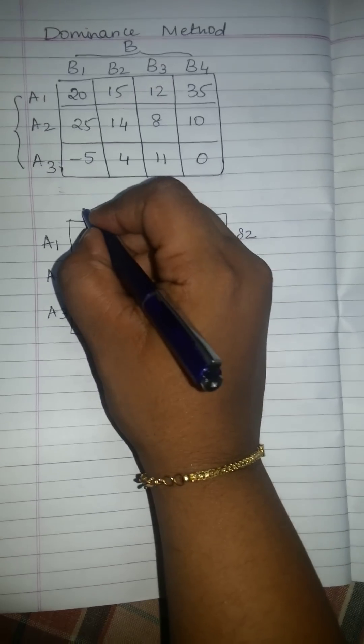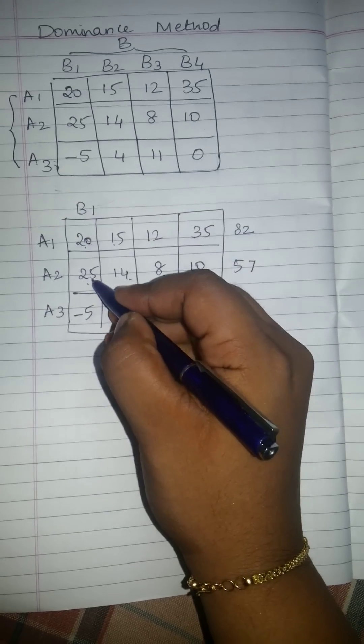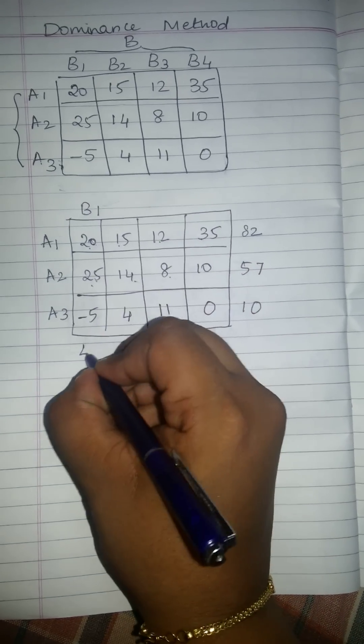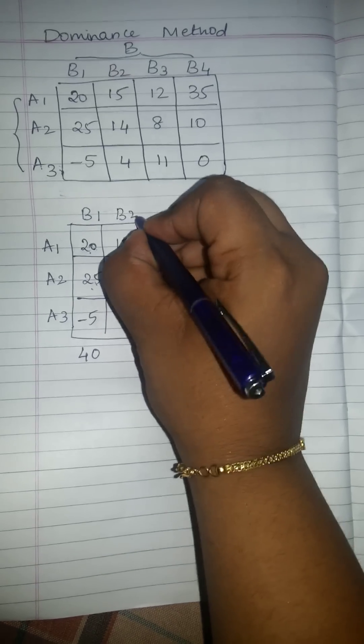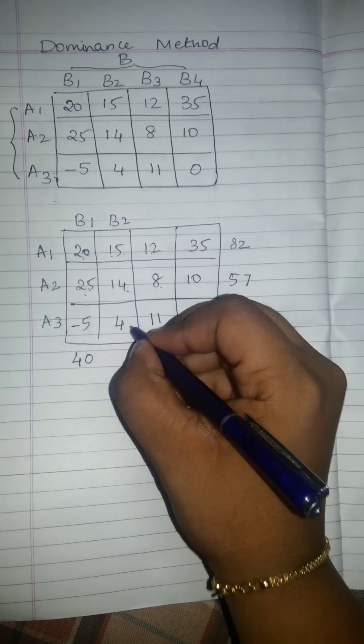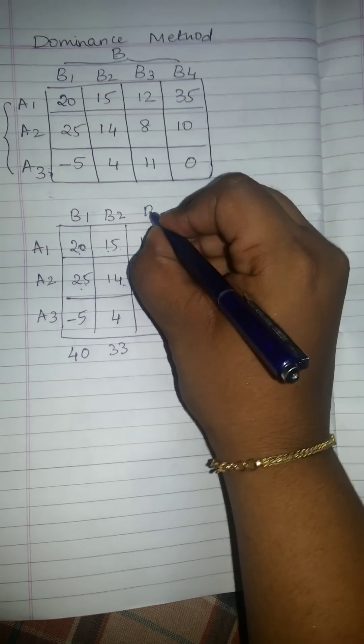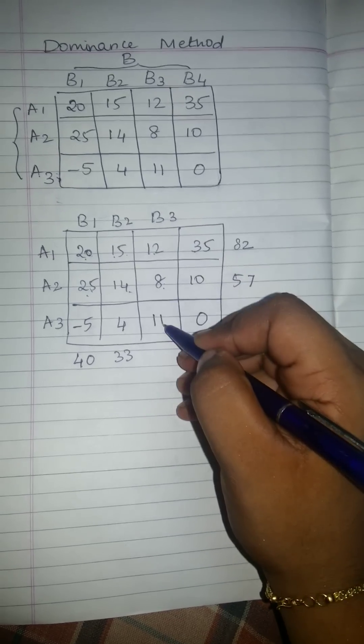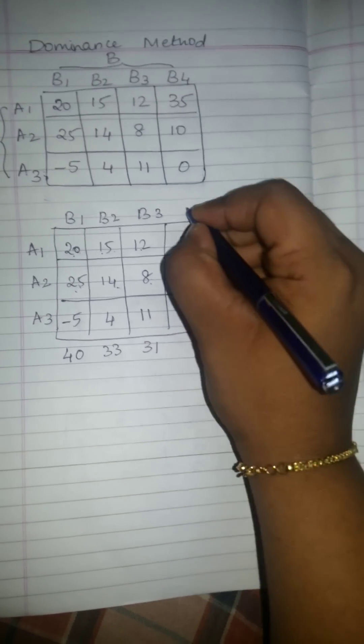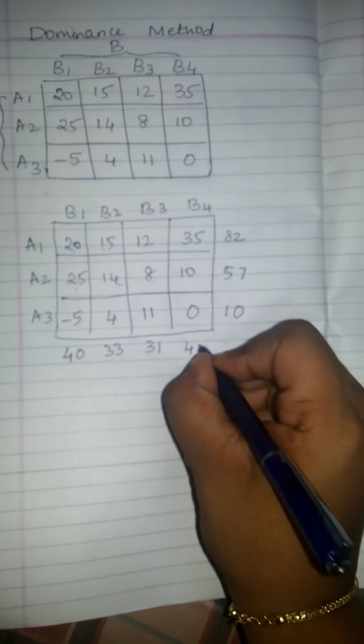And the value of column, that is B1, 20 plus 25 minus 5 will give you 40. The value of B2, 15 plus 14 plus 4, will give 33. The value of B3, that is 12 plus 8 plus 11, will give 31, and the value of B4 will be 35 plus 10 plus 0, that is 45.